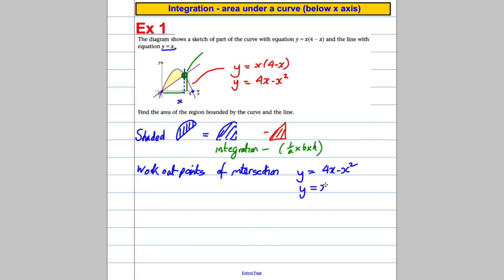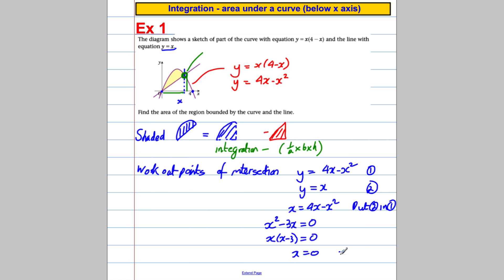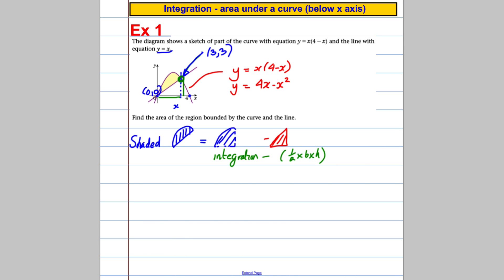I've got equation 1: y equals 4x minus x squared, and equation 2: y equals x. Making them equal each other: x equals 4x minus x squared. Adding x squared to both sides and taking away 4x gives x squared minus 3x equals 0, which factorises to give x equals 0 or x equals 3. When x equals 3, y is clearly 3 as well, so the intersection point is (3, 3).